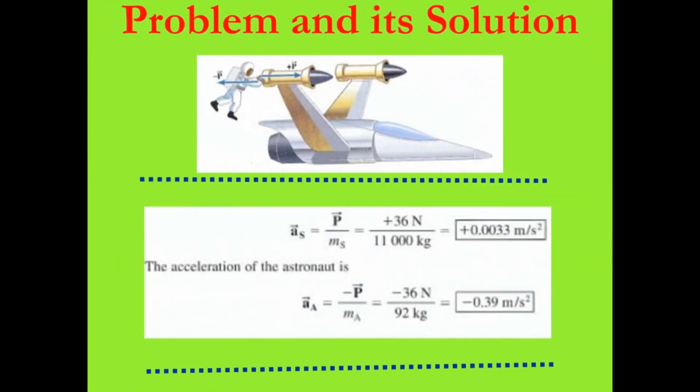Now we will solve a problem which will further clarify Newton's third law of motion. Now in this picture this illustration shows third law applying to an astronaut which is drifting just outside a spacecraft and who pushes on the spacecraft with a force p. Now what happens according to Newton's third law of motion, the spacecraft pushes back on astronaut with a force minus p that is equal in magnitude but opposite in direction. Now we will solve a numerical which will clarify the accelerations produced by each of these forces. So we have to calculate the acceleration produced by astronaut and acceleration produced by the spacecraft.